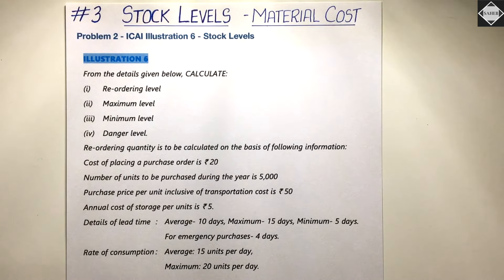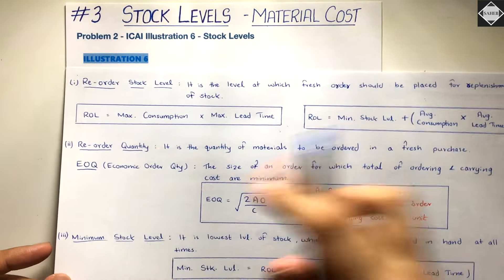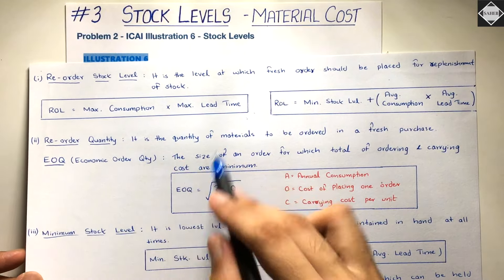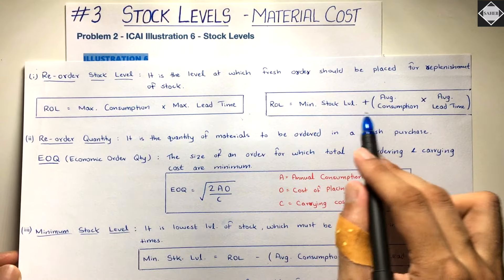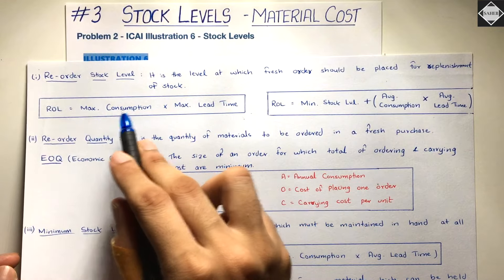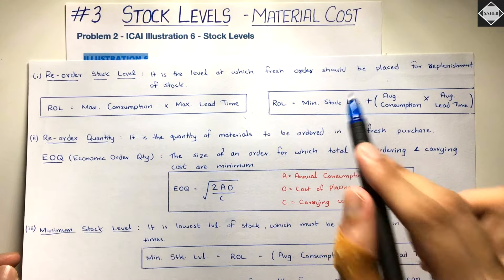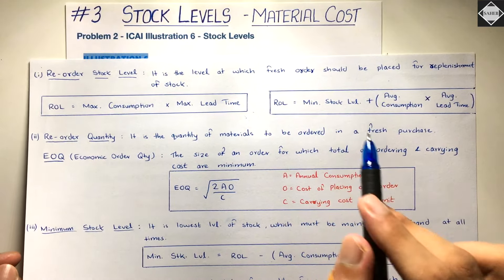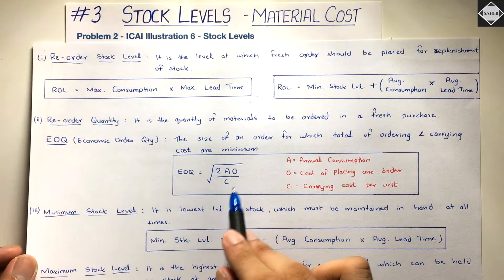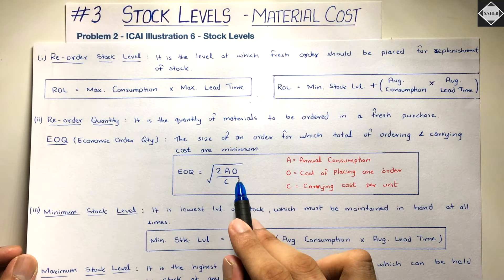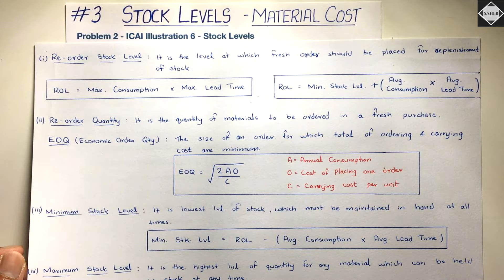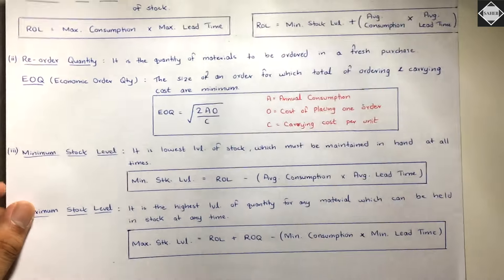There are formulas also. For reorder stock level we have two formulas: one is maximum consumption into maximum lead time, and the second is minimum stock level plus average consumption into average lead time. Mostly the first formula is used, but if minimum stock level is given in the question then use the second formula. Reorder quantity means EOQ — economic order quantity: square root of 2AO divided by C, which is 2 into annual demand into ordering cost divided by carrying cost per unit per annum. That's the EOQ formula.